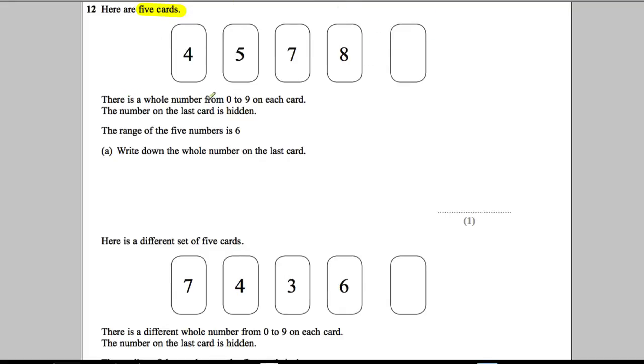There is a whole number from 0 to 9 on each card. So in each of these cards it's some whole number from 0 to 9. The number on the last card is hidden. The range of the numbers is equal to 6.